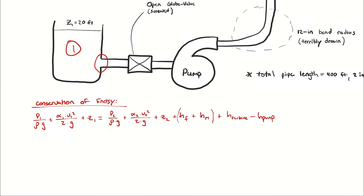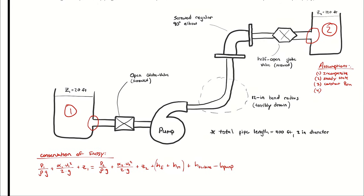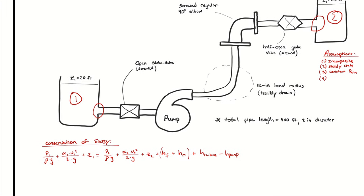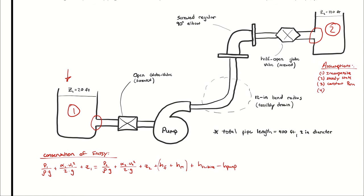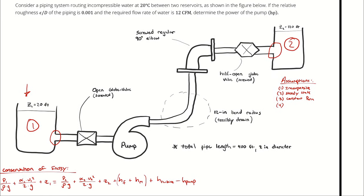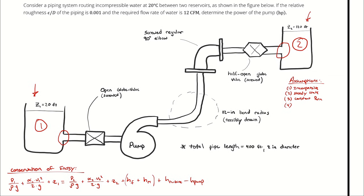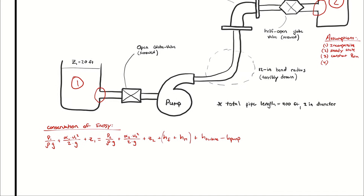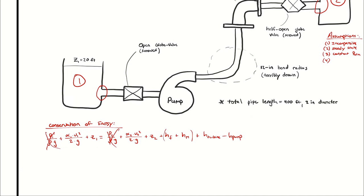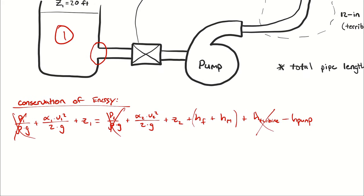I can neglect terms that aren't relevant to this situation. First of all, I will recognize that P1 and P2 are probably both pretty close to atmospheric pressure. I'm assuming the top of the reservoirs is exposed to atmosphere and that the elevation difference given is between the tops of the fluids in the reservoirs. Next, I can neglect turbine head because I don't have any turbines. And then I'm going to cancel the kinetic energy terms.